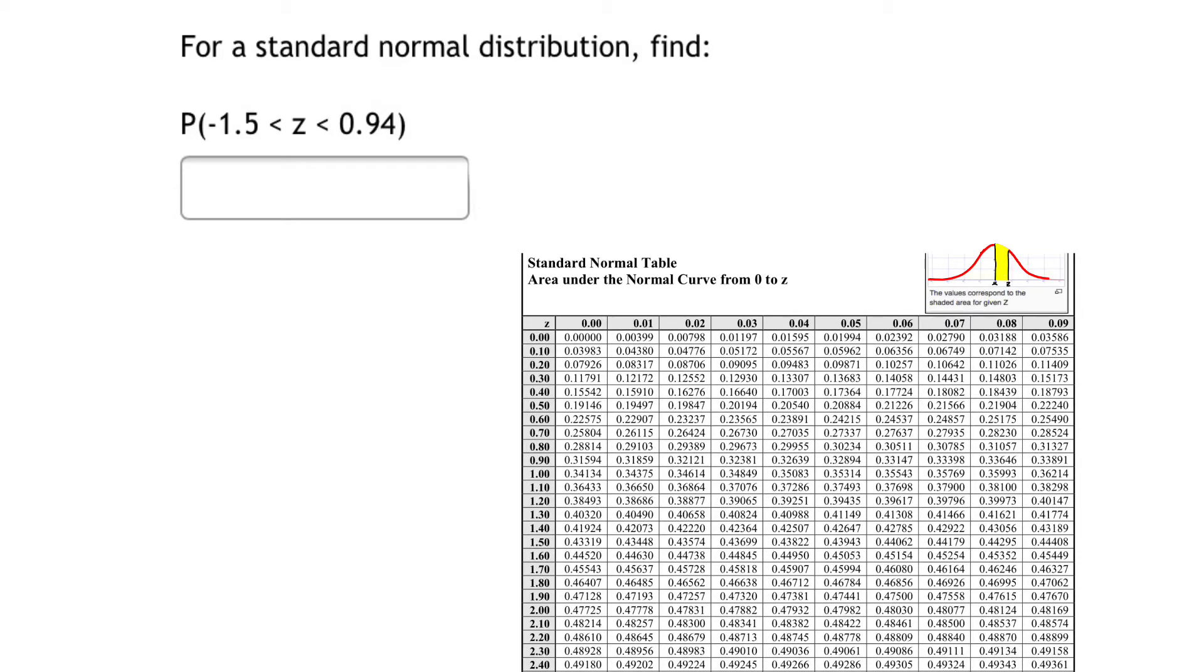For a standard normal distribution, find the probability that z lies between -1.5 and 0.94. What exactly is this problem asking? Let me draw a picture to demonstrate.